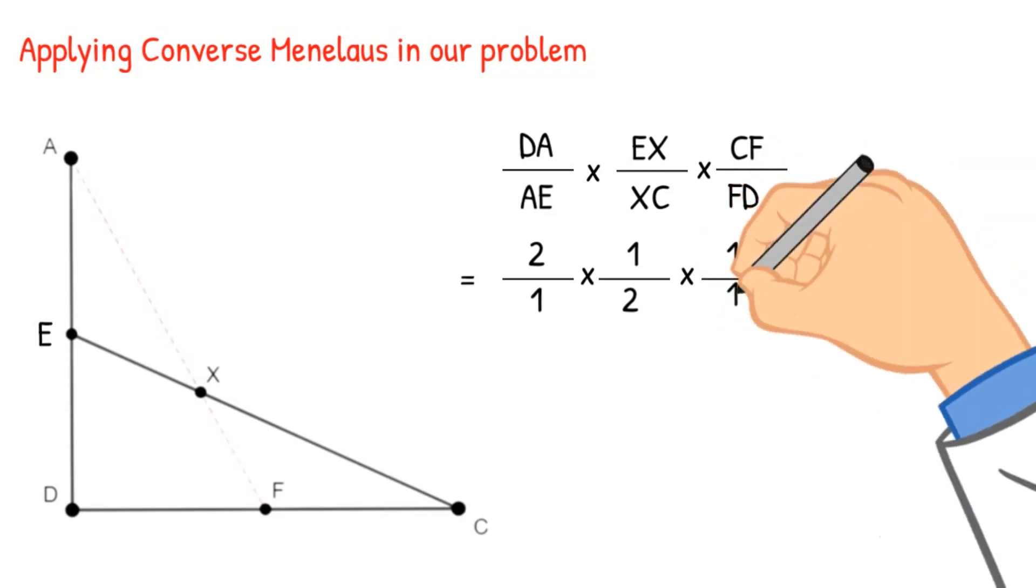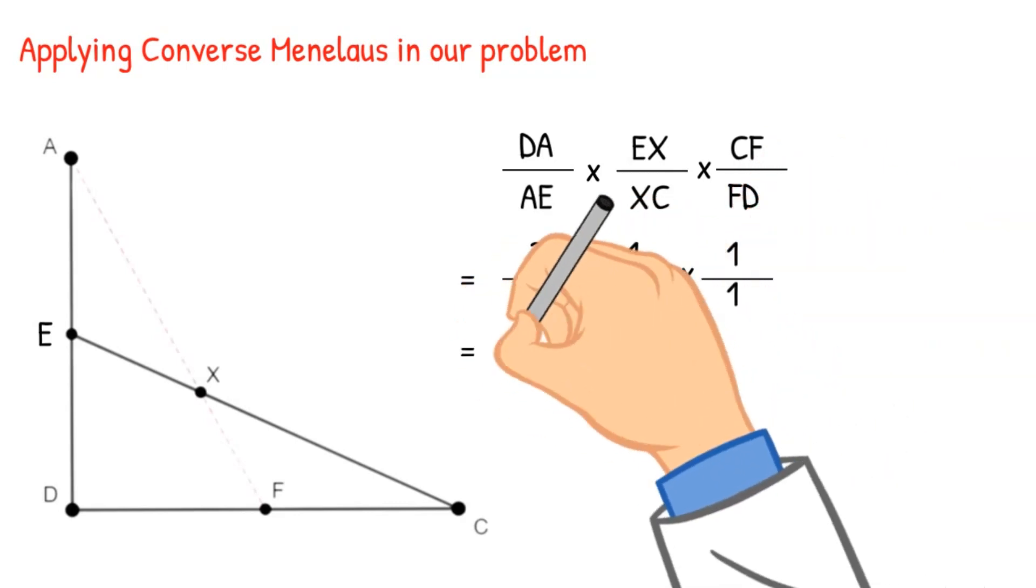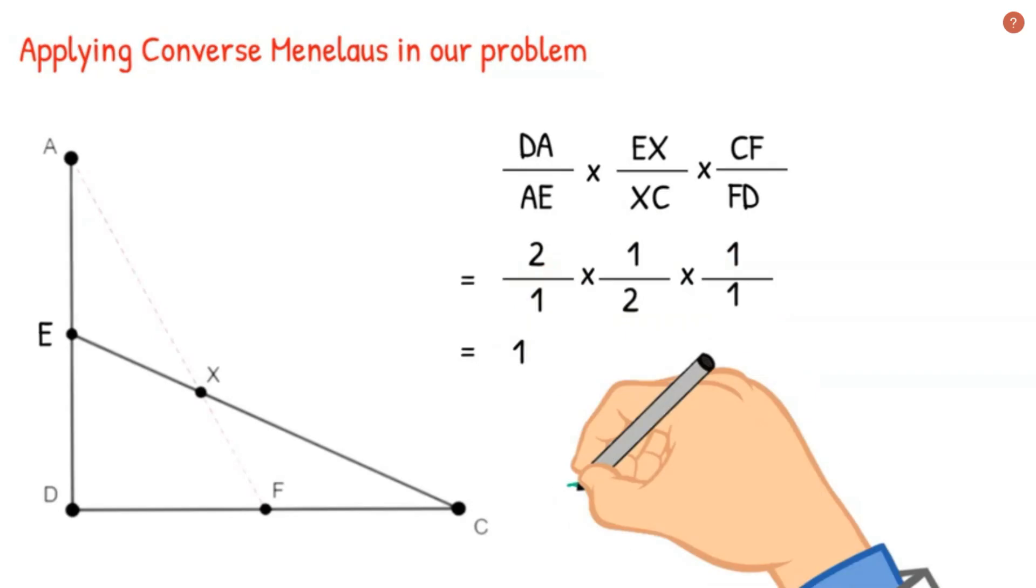And CF by FD has to be 1 because F is the midpoint of C and D. So that shows this quantity is equal to 1, and hence A, X, and F are collinear points.